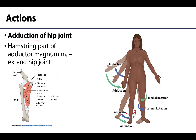I always conceptualize this compartment by thinking of getting on a horse - you instinctively adduct your thighs, pulling them closer to the median plane in order to lock yourself onto the horse and keep from falling. In fact, individuals who competitively ride horses often have very prominent linea aspera and hypertrophied adductor muscles because of that repetitive action.